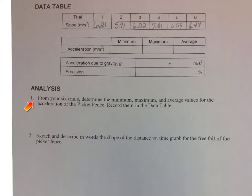So it says from your six trials determine the minimum, the maximum, and the average values for the acceleration of the picket fence and record them in the data table. So up here you'll see a place for the minimum, a place for the maximum, and a place for the average.